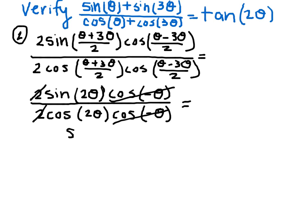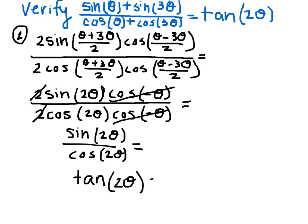So all that's left is sine of 2 theta, divided by cosine of 2 theta. And we can simplify that to be tangent of 2 theta, which is what we needed to verify.